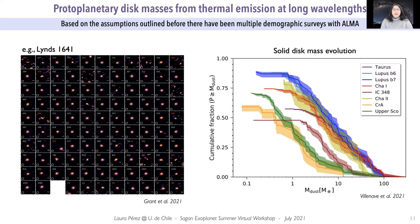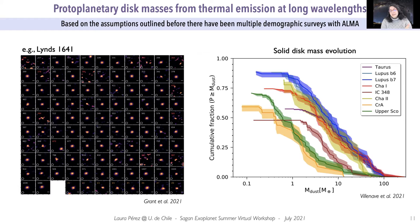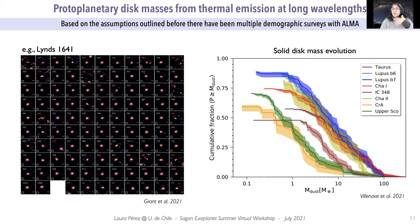By integrating this equation over the entire disk, you can relate the dust or solid mass to the observed flux density, accounting for distance and making assumptions about opacities and temperature. Many surveys have done this, and here is a recent example of continuum observations at long wavelengths of many disks in Lynds 1641, which can be related to dust masses. One can then construct comparative plots showing distributions of disk mass for different star forming regions — some young, some old — to look for evolution in the solid disk mass.